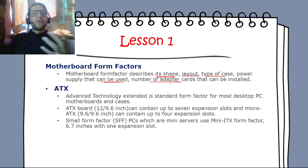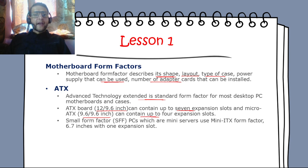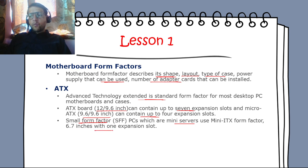ATX — Advanced Technology Extended — is the standard form factor for most desktop PCs. An ATX board can contain up to seven expansion slots. Micro ATX can contain up to four expansion slots. Small Form Factor PCs and mini servers use Mini-ITX, which is 6.7 inches and has one expansion slot.